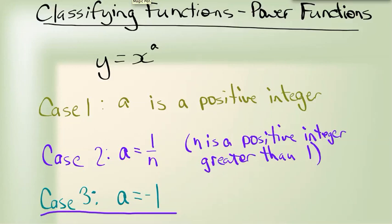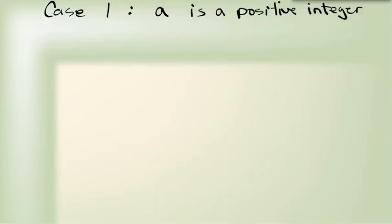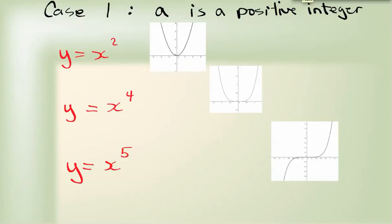If I look at Case 1 where a is a positive integer, this is essentially a polynomial. It's like y equals x squared, or y equals x to the fourth, or y equals x to the fifth. It's anything that is a positive integer. Any time a is a positive integer, we end up with a polynomial function.